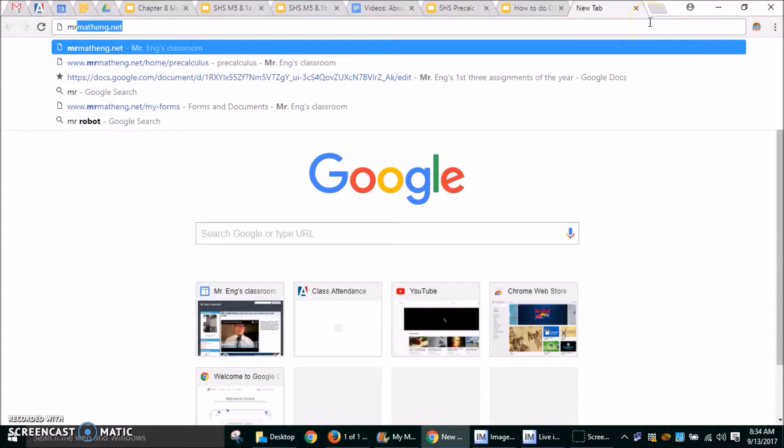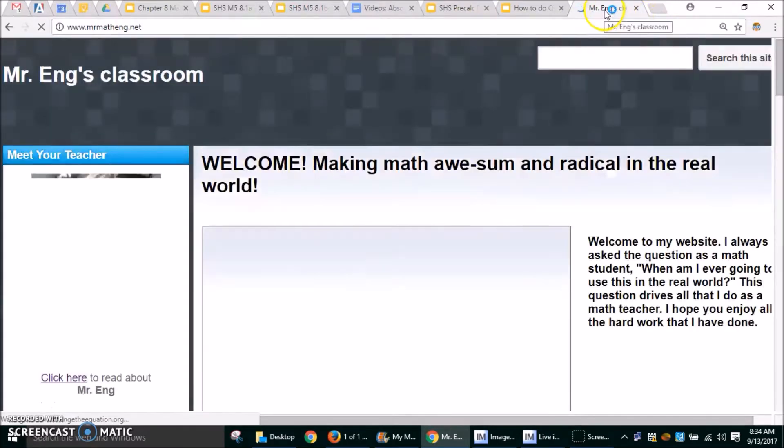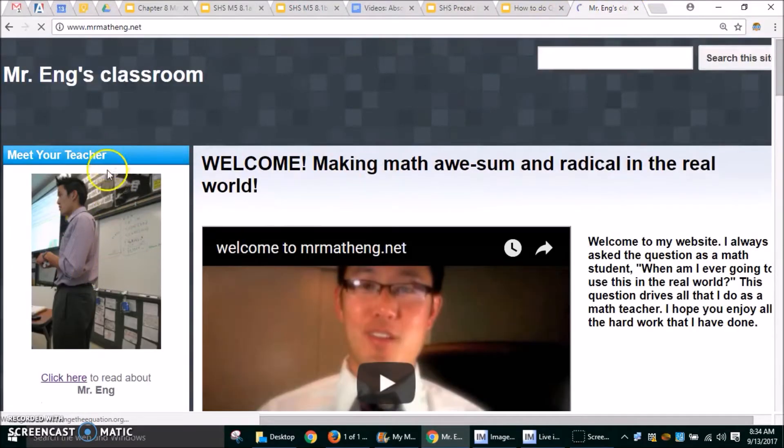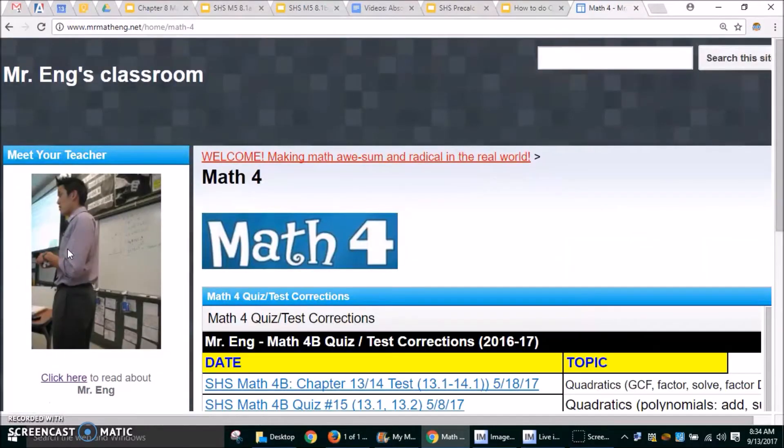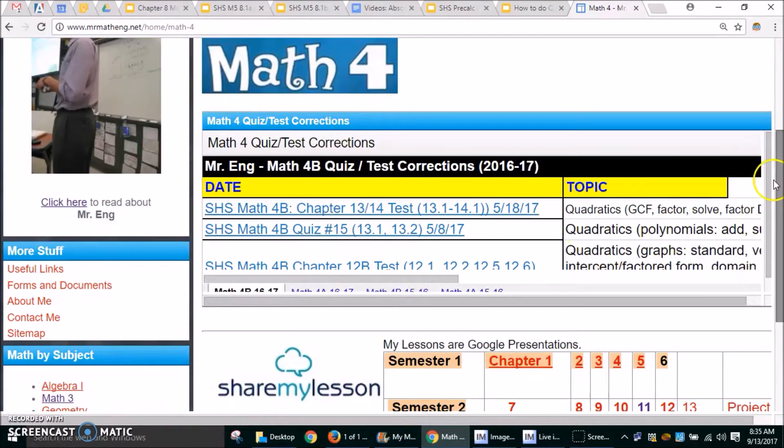So how do you get there? Just go to my website mrmathing.net and then over here on the left hand side you're going to scroll to the topic. For example, it might be math 4, Precalc, math 5, math 3, stats, and then you're gonna go ahead and find...